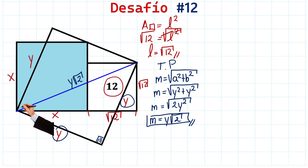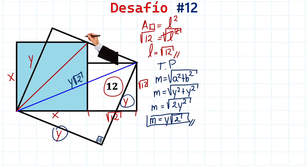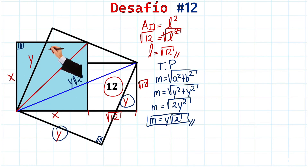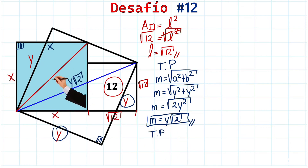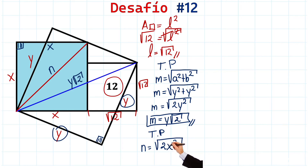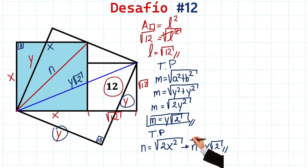Now we're going to draw another line from here to this vertex over here. We can also find the value of this red line the same way we found the blue line, because now we have 90 degrees here. This side measures X, this side also measures X, and this is the hypotenuse. Again, using the extremely powerful Pythagorean theorem — this line, which we'll call N, equals the square root of X squared plus X squared, giving us 2X squared. Taking the square root of X squared, we get N equals X times the square root of 2.